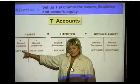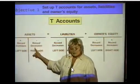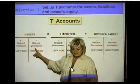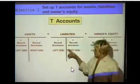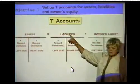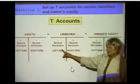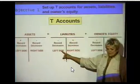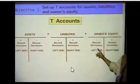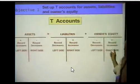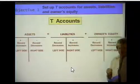If it happens to be a decrease on an asset account, you would write it on the right side. If it's a liability account, increases are written on the right side and decreases are written on the left side. If it's an owner's equity account, increases are on the right side and decreases on the left side.